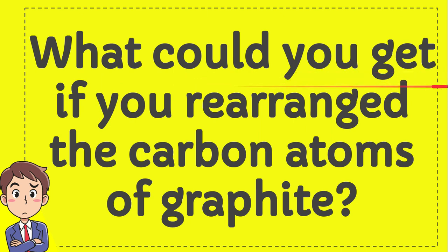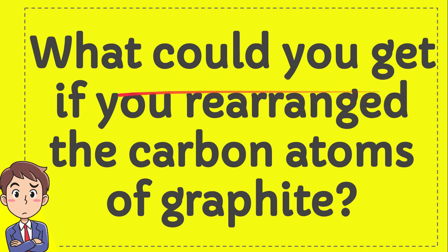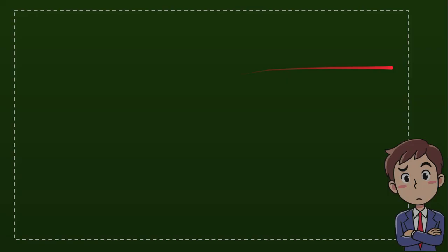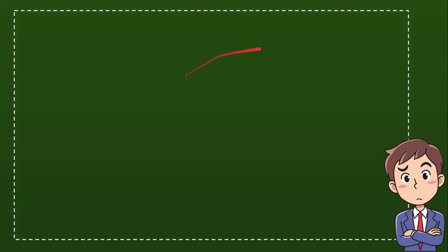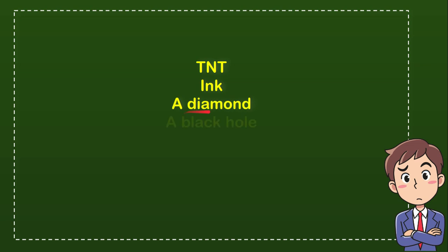What could you get if you rearrange the carbon atoms of graphite? I'll give you four options — try to guess the correct answer. The first option is TNT, the second option is ink, the third option is a diamond, and the last option is a black hole. Which one do you think is the correct answer?